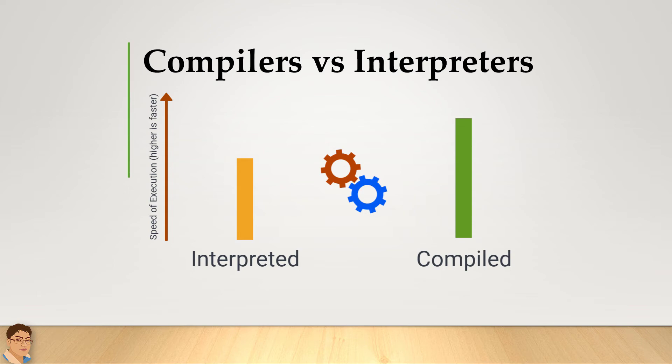On the other hand, the compiler translates a program's entire source code into efficient machine code that a computer can execute directly. Therefore, compilation is a one-time cost, while interpretation adds an overhead each time a program runs.